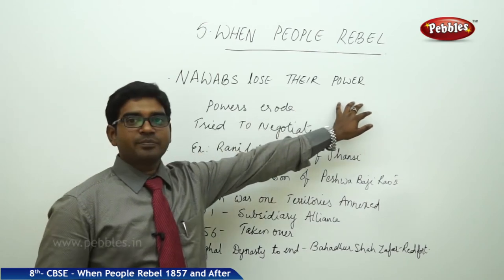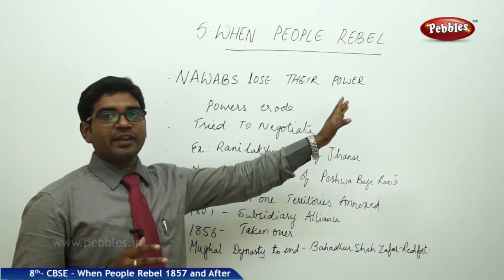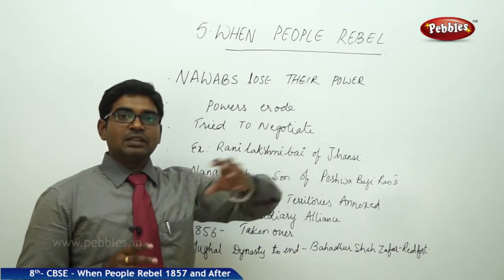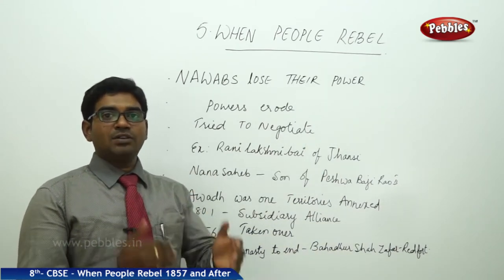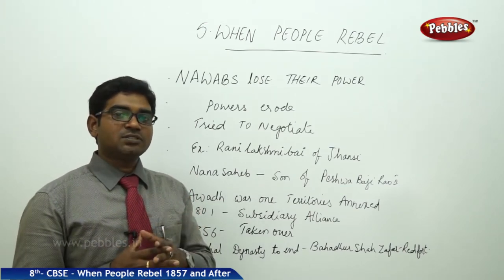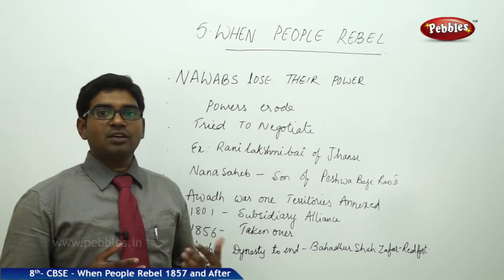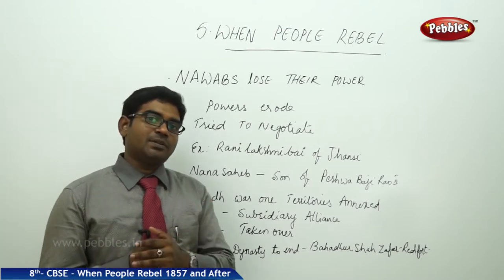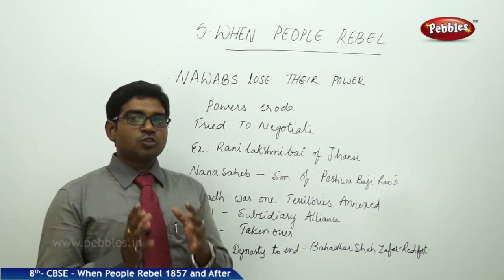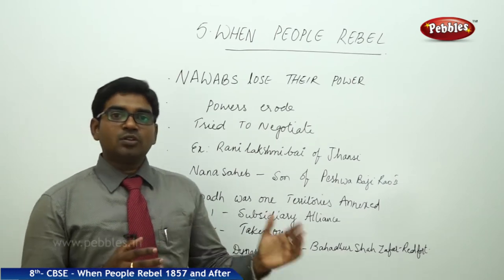First of all, Nawabs lose their power. Almost all the Nawabs lost their powers when fighting against the Britishers. The power got eroded. The Nawabs of Bengal, the Nawab of Awadh — the Nawabs were always defeated by the Britishers, either through conspiracies or by British strength. Once defeated, it became very difficult for the Nawabs to come back, and slowly their power got eroded away.